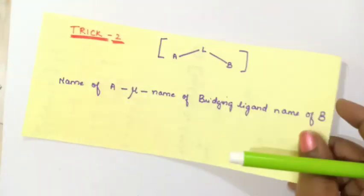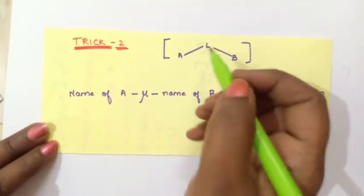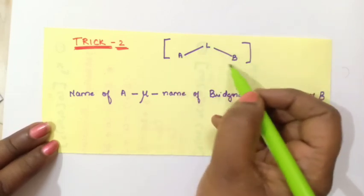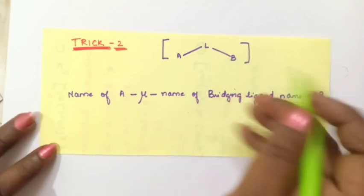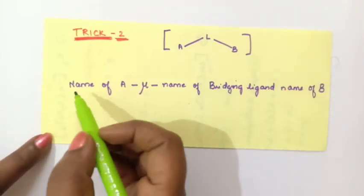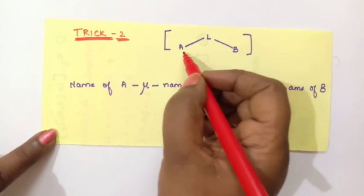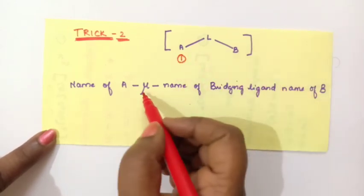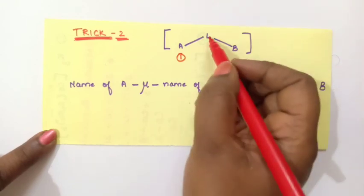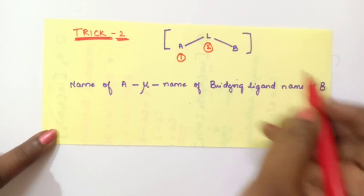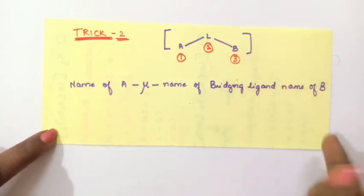Next we will see the second trick. The second trick: suppose a bridging ligand is connected to 2 different groups — group A on one side and group B on the other. In this case, first write the name of A, then mu-dash followed by the name of the bridging ligand, and then the name of B.